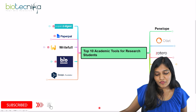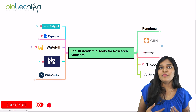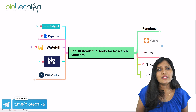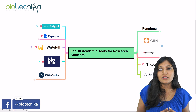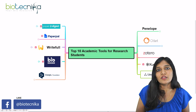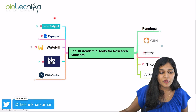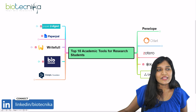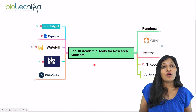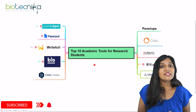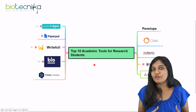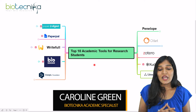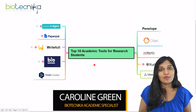These are the top 10 academic tools: Paper Digest, Paper Pal, Rightful, BioRender, DeepL Translator, Fenelope, Outlet, Zotero, Kudos, and Lit Maps. Whether you're an MSc researcher or anyone who wants to learn academic tools, you can bookmark or download these in your laptop — they'll help with writing research papers and many other things. If you really like this video, please like, share, and subscribe to our channel. Put any questions in the comments section and we'll revert back to you. Thank you!